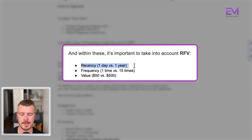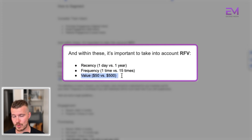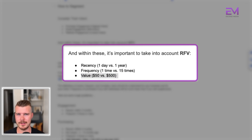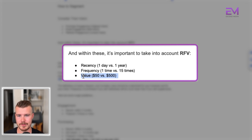Recency would be: has someone purchased in the last day or in the last year? Frequency: has someone purchased once or 17 times? Value: has someone spent $50 or $500? It's very important to look at this when creating segments because we want to understand how engaged people are, how recently and frequently they purchased, and how valuable they are — so we can address them based on their current level of intent.